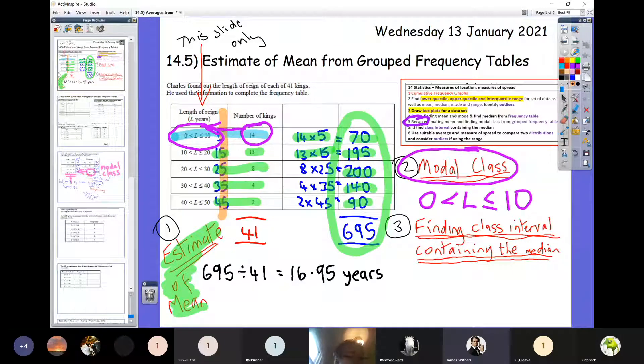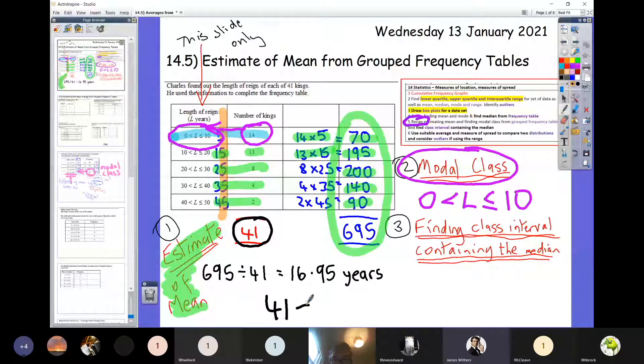The third thing they can ask you is the equivalent of yesterday when they were asking you for the median, the middle one. You've got to find the class interval containing the median. Exactly the same as yesterday, so work out the middle one. To work out the middle one, we start off by seeing how many kings we've got. We've got 41 kings. We're going to divide 41 by 2 to get halfway along, and we want the 20th or the 21st king. So you work your way down. In that first row we've got 14 kings. Have we got to our 20th or our 21st king yet? No we haven't. So move down to the second row.